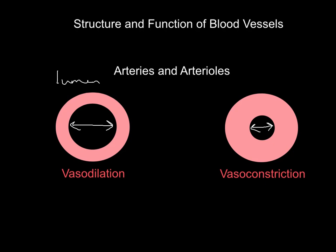Why would you want to increase and decrease blood flow to an area? That's best covered in the video on redistribution of blood, also known as vascular shunt. But in a nutshell, if I'm doing squats, I will vasodilate the arteries and arterioles leading to the muscles in the legs to give them more blood and oxygen, whereas I will vasoconstrict to the muscles in the upper body that don't need as much blood at that moment.